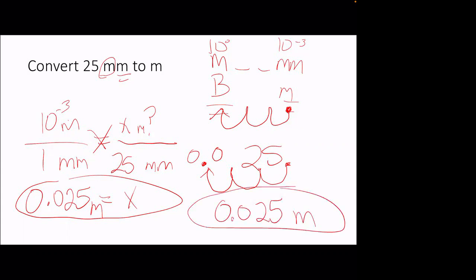We move the decimal point in equal number of spaces in the same direction as we did in our little chart, right? From millimeters to meters, moving three to the left. We move the decimal point three to the left. And we get the same answer as we did when we did all the proportional equation, fancy math and stuff. A lot simpler.